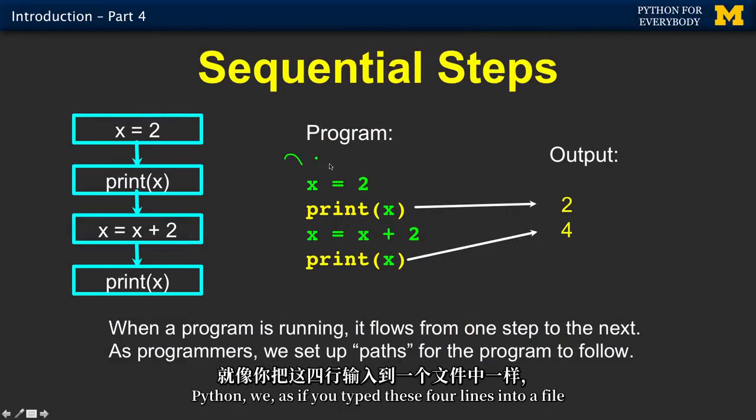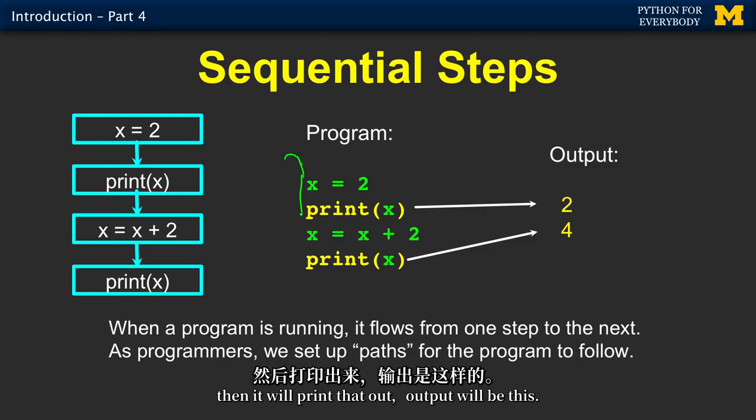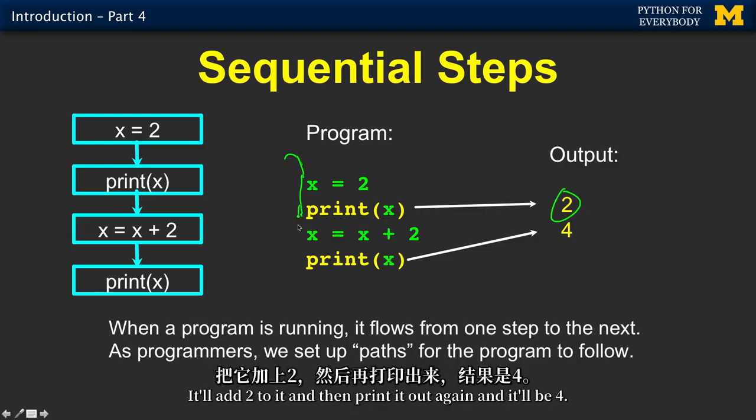This is an example of a four-line Python program that has four basic steps. If you type these four lines into a file and told Python to execute them, Python will stick two in the variable x, then print that out, our output will be this, it'll add two to it, then print it out again, and it'll be four.